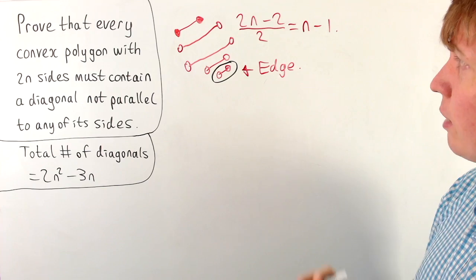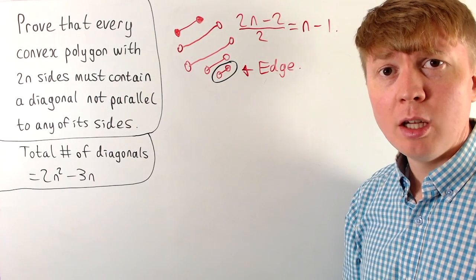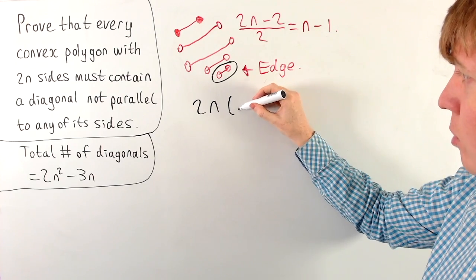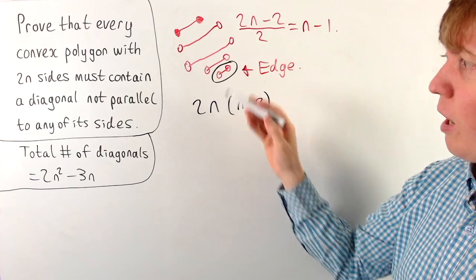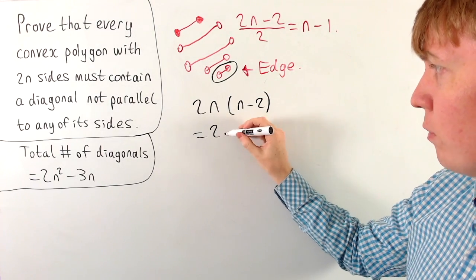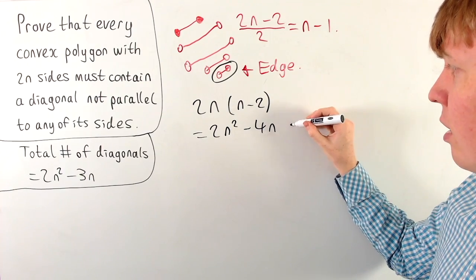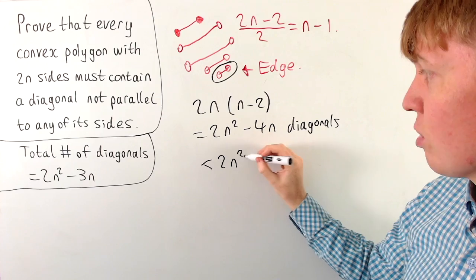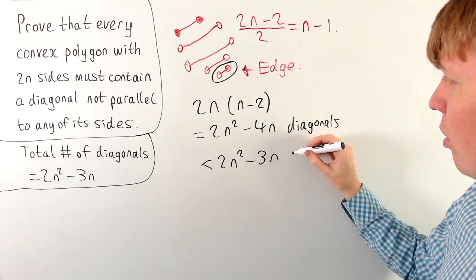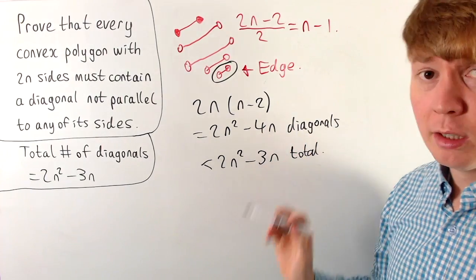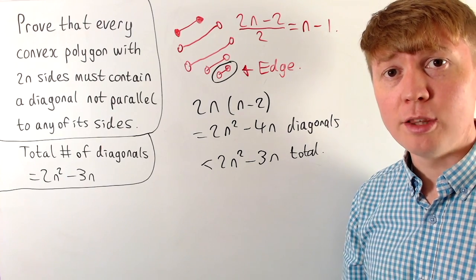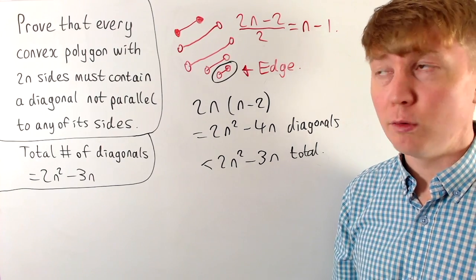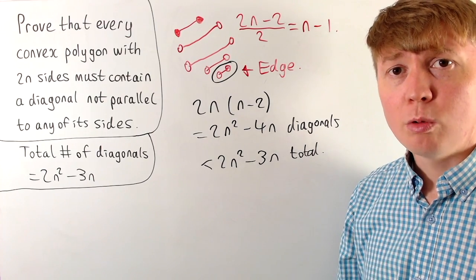This reduces our upper bound: instead of n minus 1 diagonals parallel to each edge, we can have a maximum of n minus 2. So for each of our 2n edges, there are at most n minus 2 diagonals parallel to it, giving an upper bound of 2n times (n minus 2), which expands to 2n² minus 4n. This is indeed less than our total number of diagonals, 2n² minus 3n. So we've shown the maximum number of diagonals parallel to any side is less than the total number of diagonals, meaning there must be some diagonals which aren't parallel to any of the sides — and the statement is proven for a convex polygon with 2n sides.